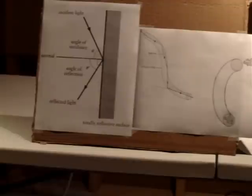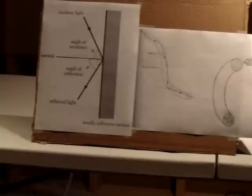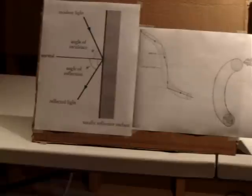Now, refraction is slightly similar. It's the bending of light as it passes at an oblique angle from a material of one refractive index to a material of another refractive index. When the incident ray hits the new medium, some of the light is reflected, but most of it actually passes through the medium. If the initial refractive medium is more refractive than the new medium, the light will bend away from the normal. But if the initial refractive medium is less refractive than the new medium, it will bend towards the normal.